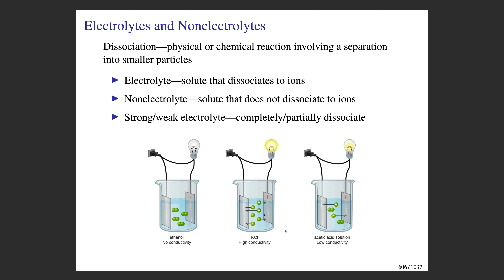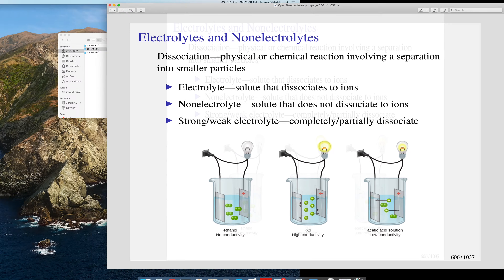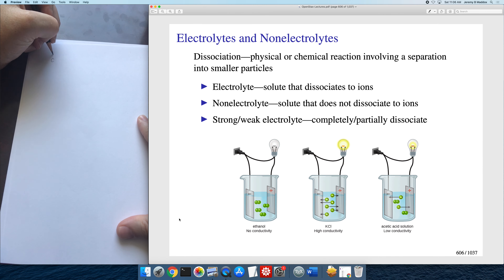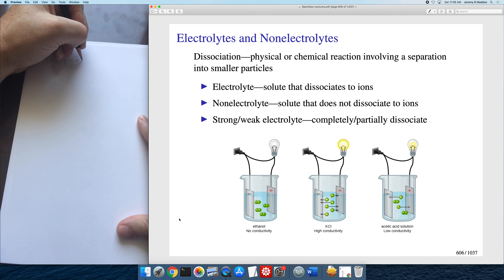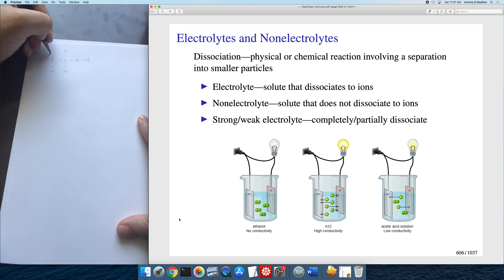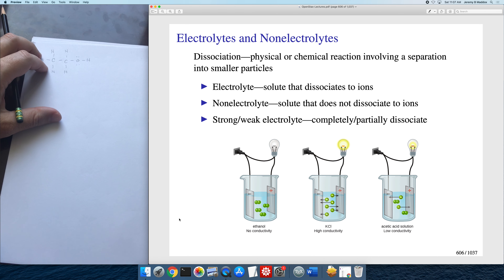When we have an electrolyte solution, we can talk about the relative degree of ionization in terms of strong versus weak electrolytes. A strong electrolyte completely dissociates to form ions; a weak electrolyte only partially dissociates. The cartoon below illustrates the difference. Ethanol is an alcohol that dissolves readily in water because it can interact through hydrogen bonding, but it doesn't ionize.